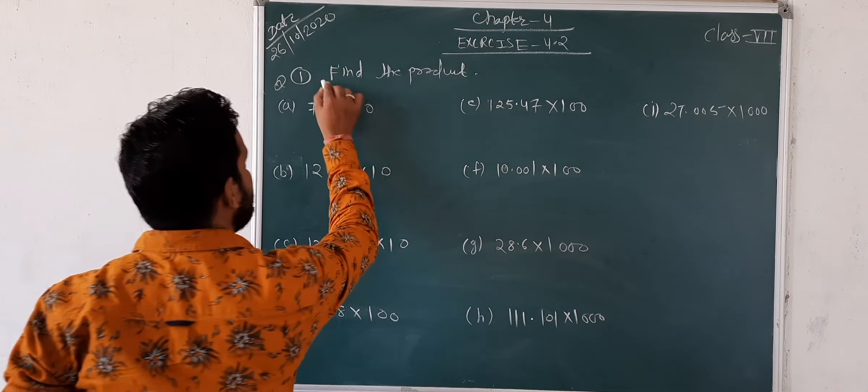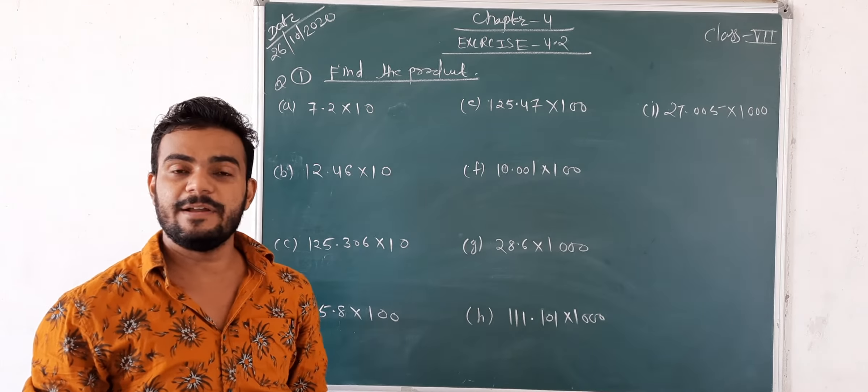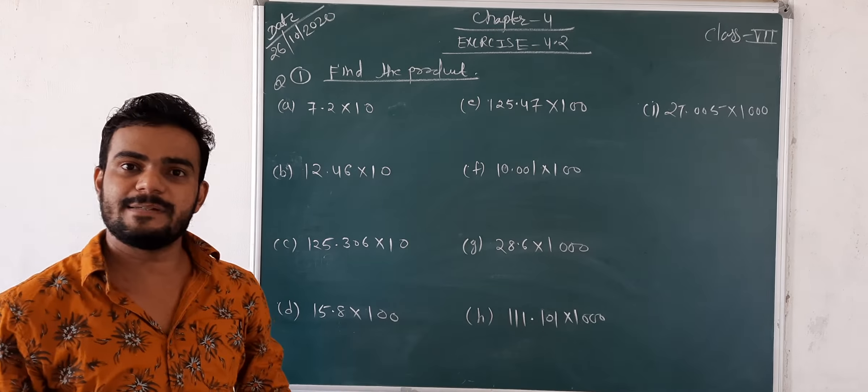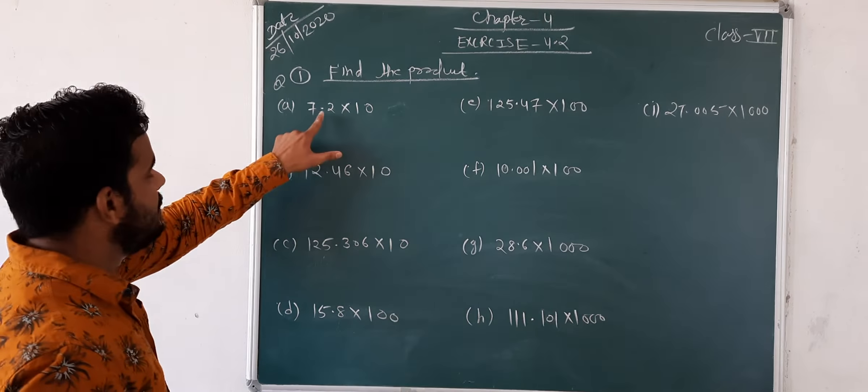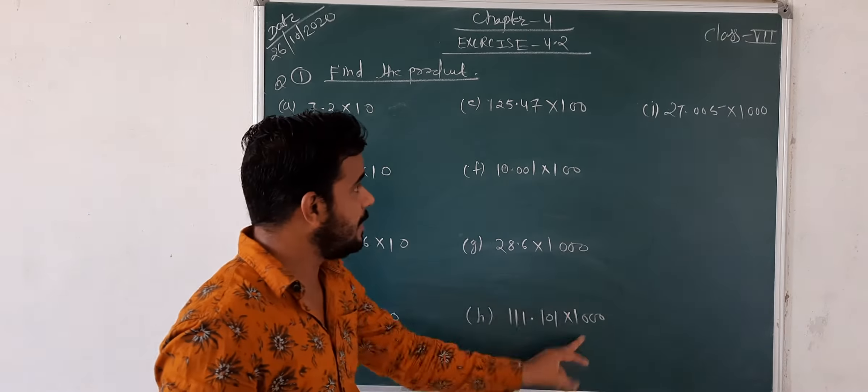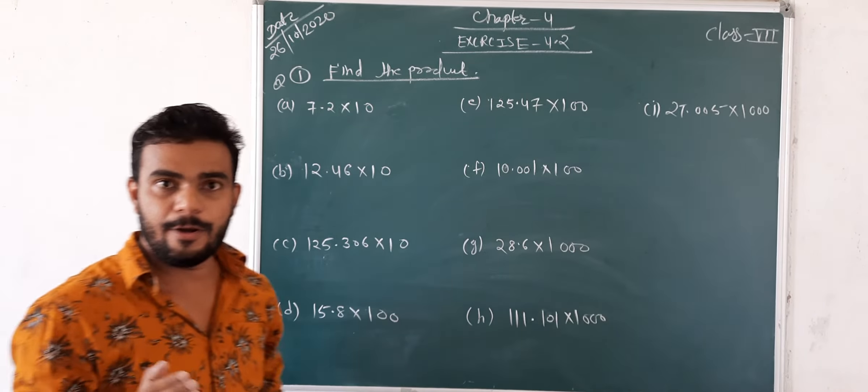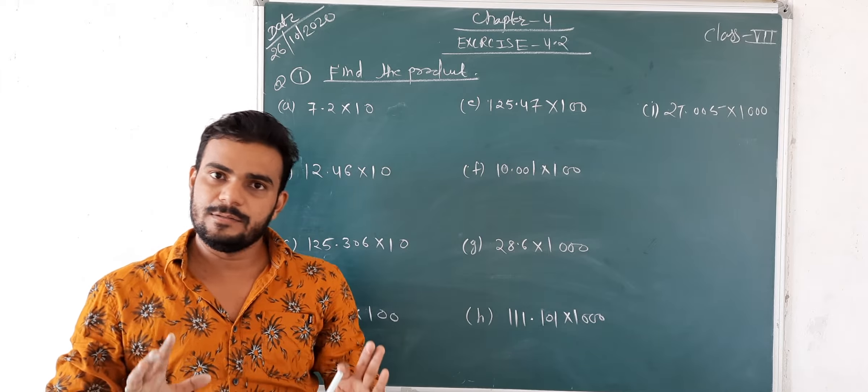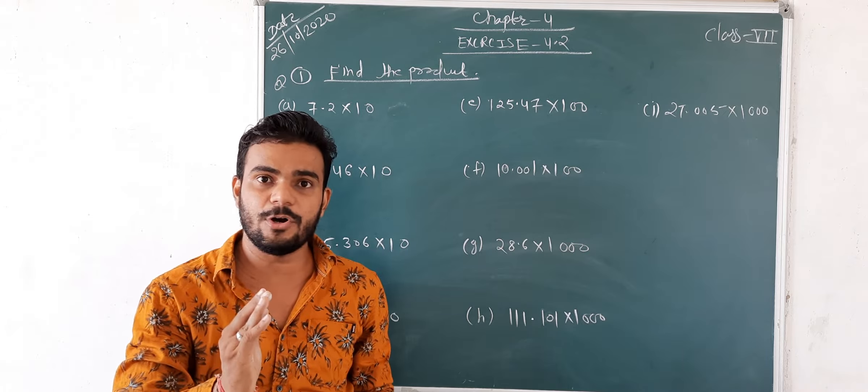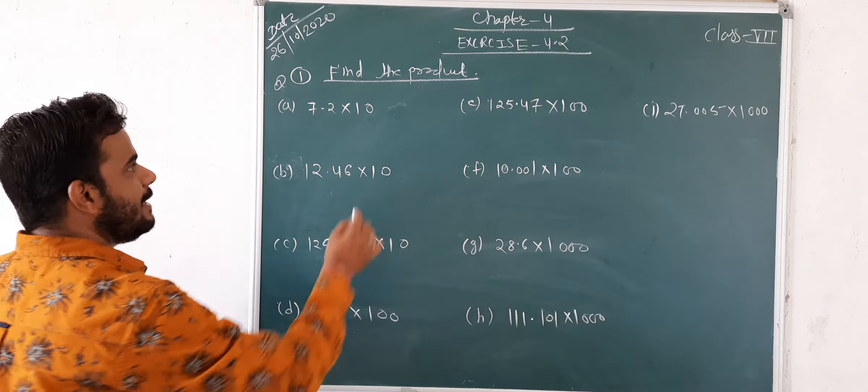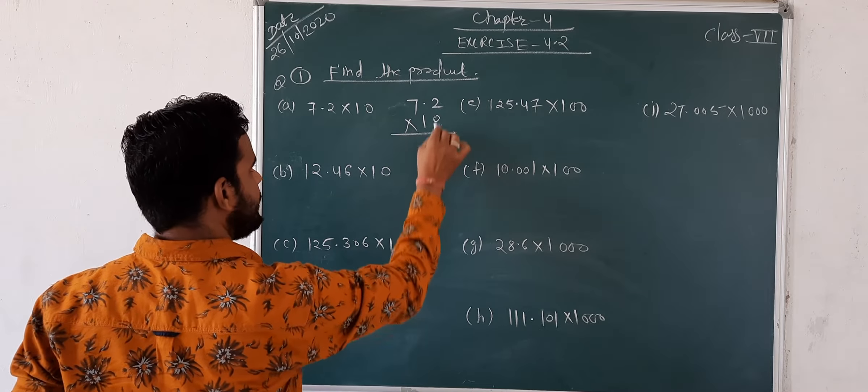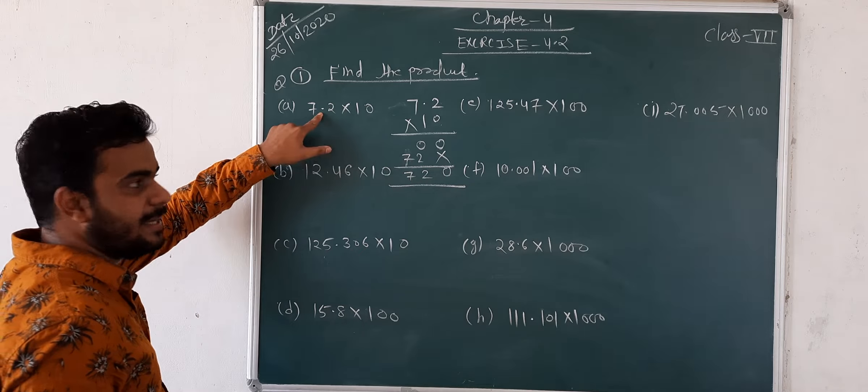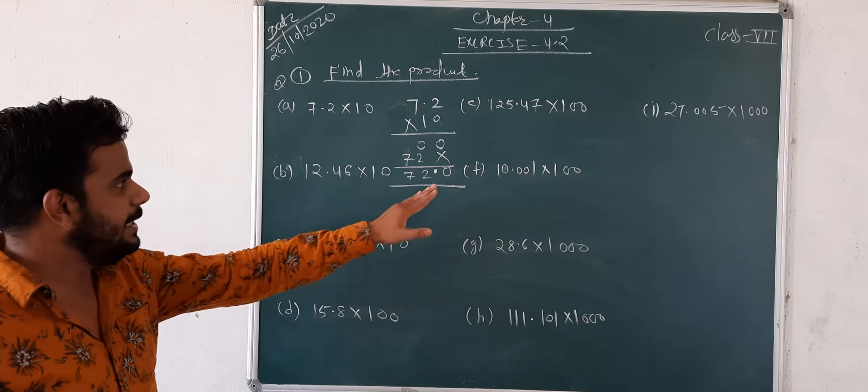The first question, find the product. As you know how we will do the multiply, same as like this. But you have to use the direct way. Just see. Multiply by 10. Multiply by 10, 100, 1000. When you will multiply by 10, 100, 1000, then remove your point, decimal and right hand side.